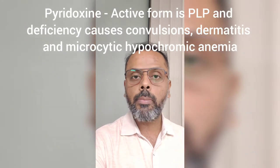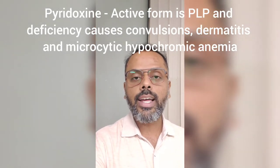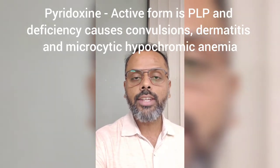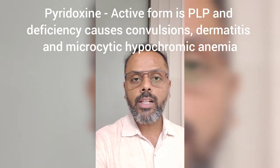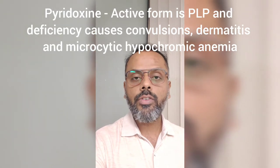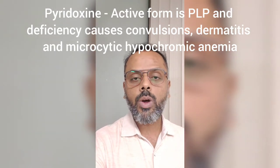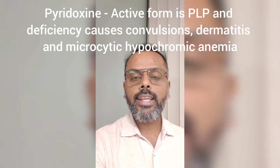Vitamin B6 is also known as pyridoxin. The active form of pyridoxin is pyridoxal phosphate (PLP), which is required for the transamination reaction, non-oxidative deamination reaction, transsulfuration reaction, and decarboxylation reaction. The deficiency of vitamin B6 causes epileptic convulsions, dermatitis, and microcytic hypochromic anemia.